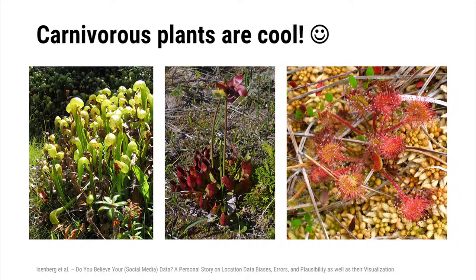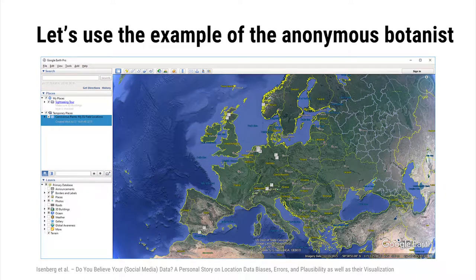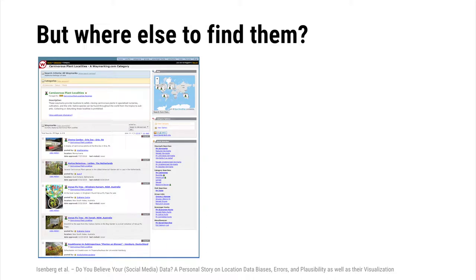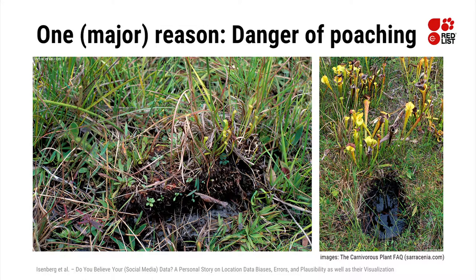Let's start with something obvious: carnivorous plants are cool, and there are people who like to see them in the wild. Consider a botanically interested researcher who has lived in certain places, traveled for vacation, and gone on business trips — all while spotting plants. Now he goes to a new place. He can search the web, but sites mostly mark botanical gardens. Regular searches don't provide much either, and there's a good reason: most plants are protected and some are on the red list, so people don't share their locations.